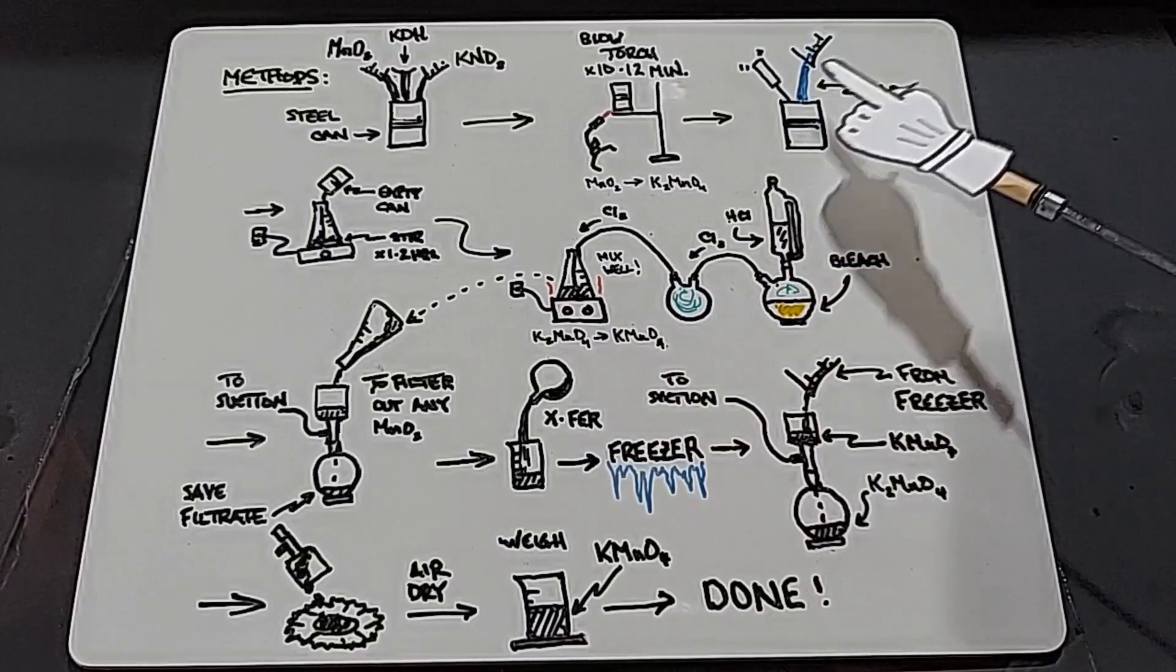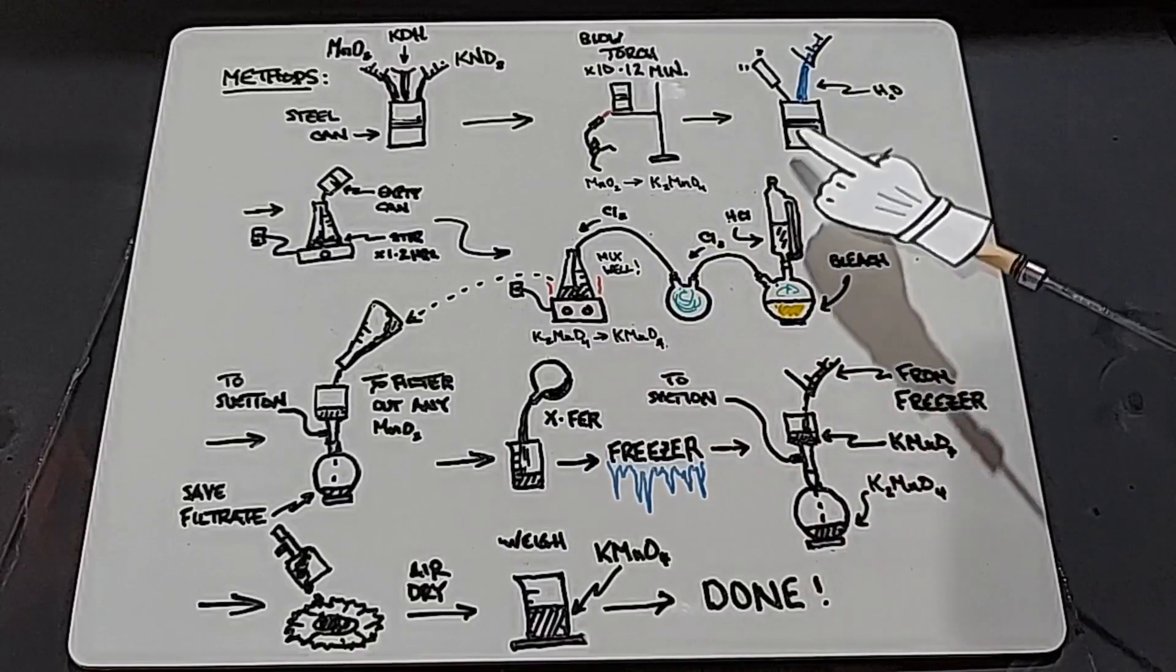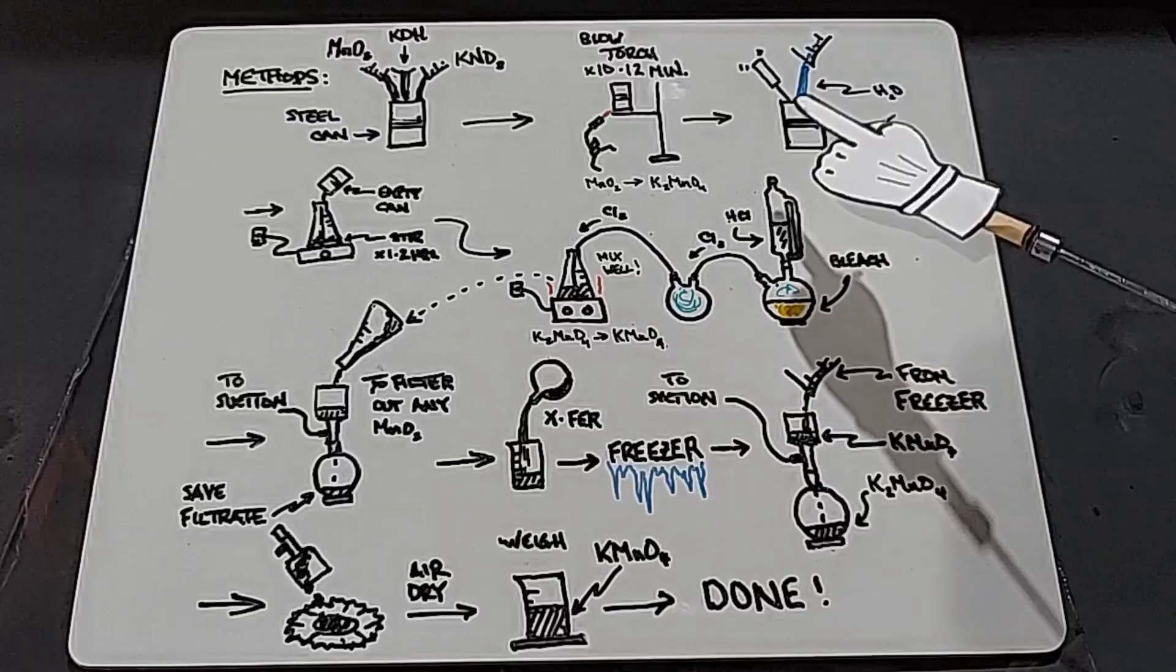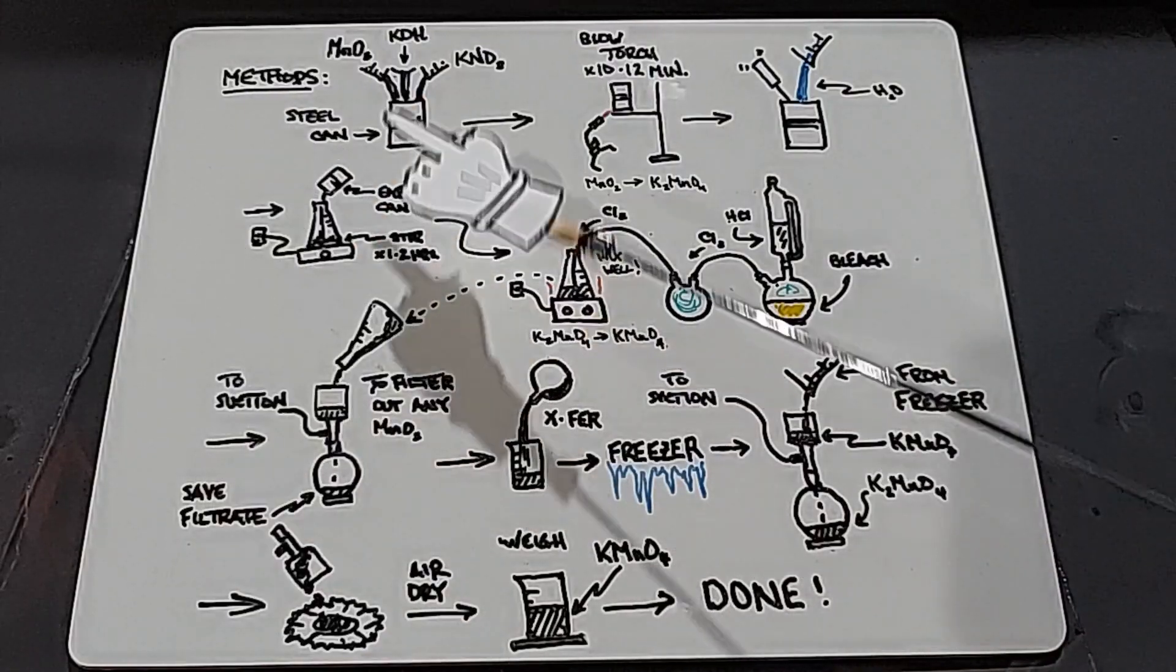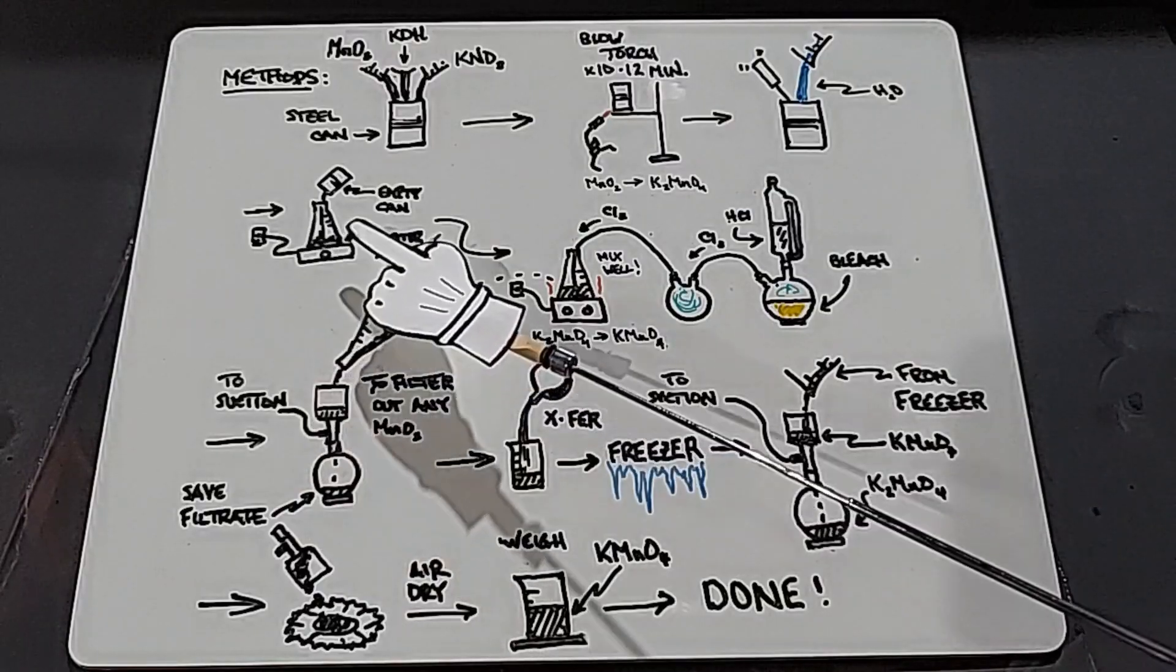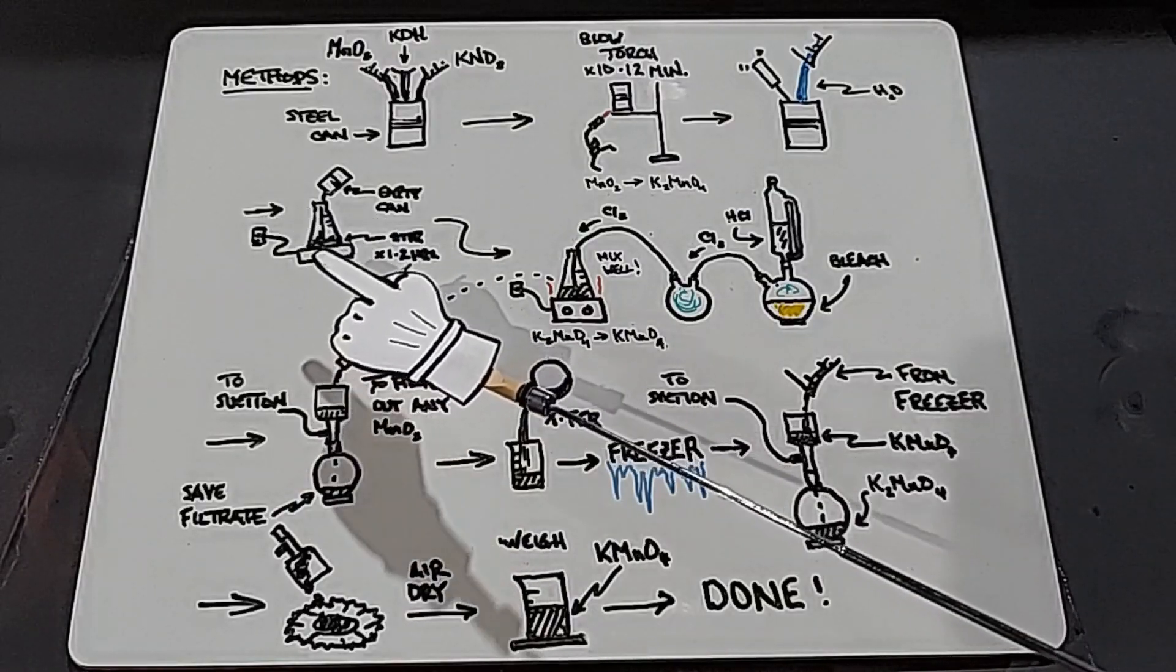Once we let the can cool down, we're going to add water and use a screwdriver or whatever to break up the chunks at the bottom because it's going to be a pretty hard chunk. Then we're going to put the contents into a flask and stir it for at least one to two hours to make sure everything is broken up really well.